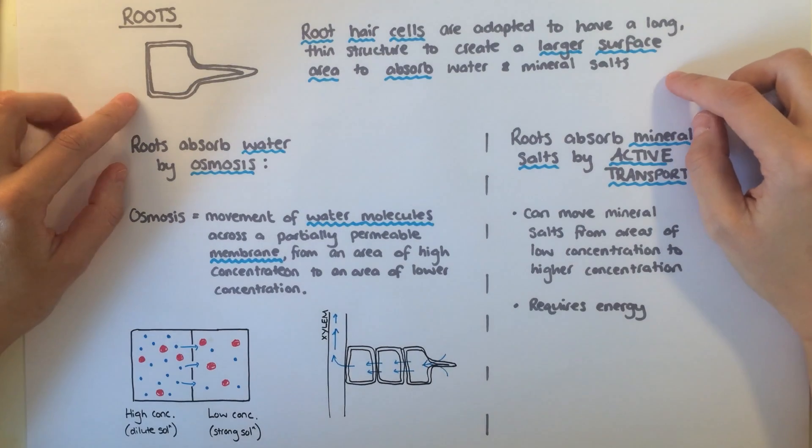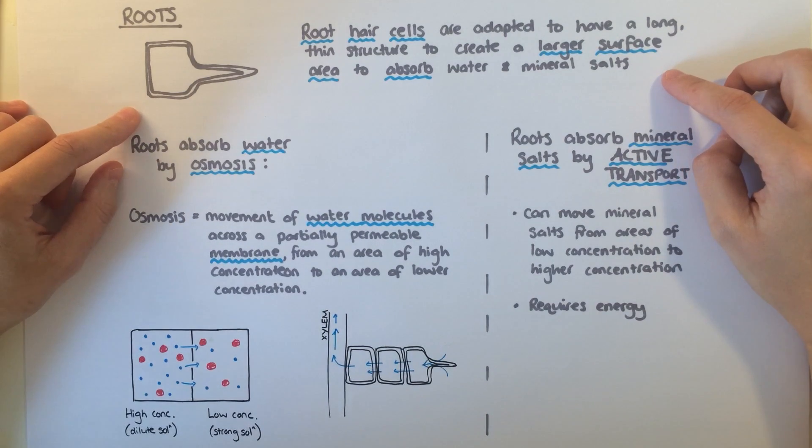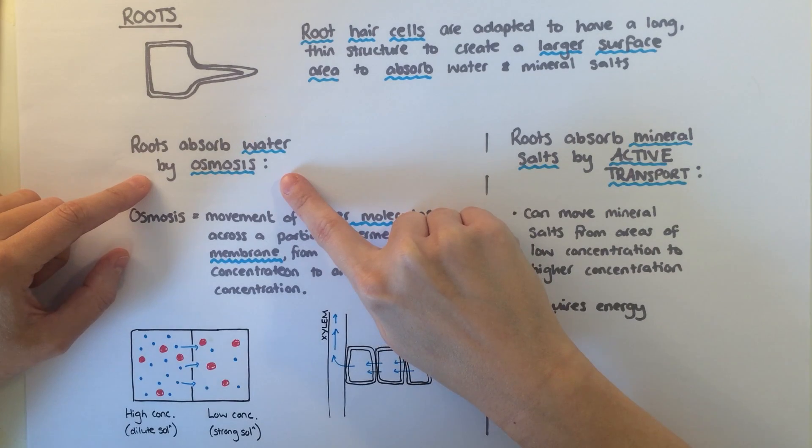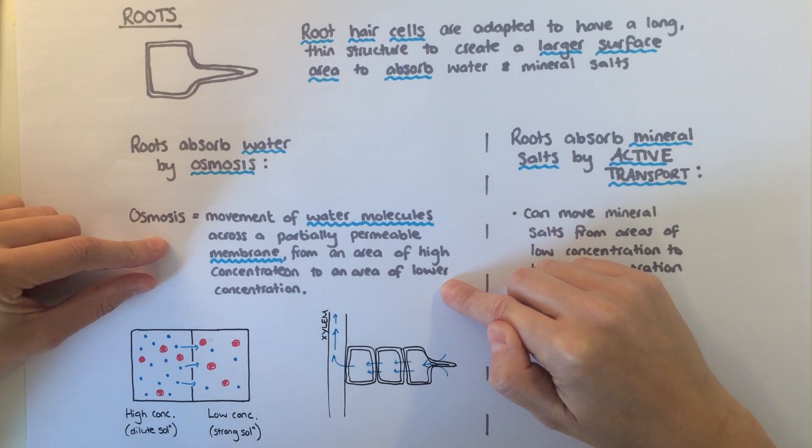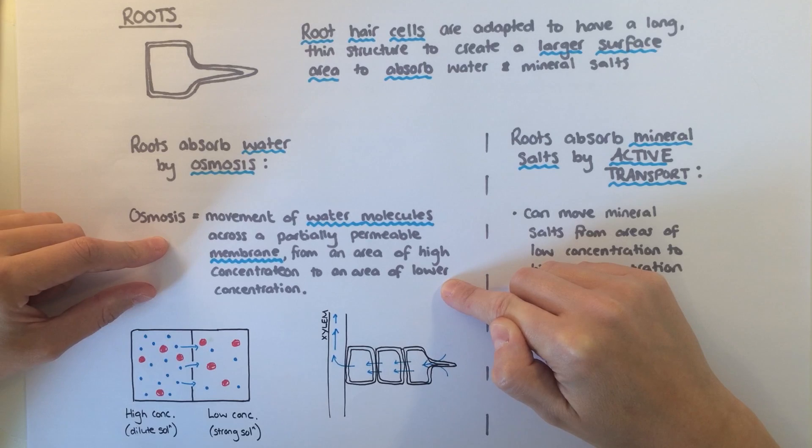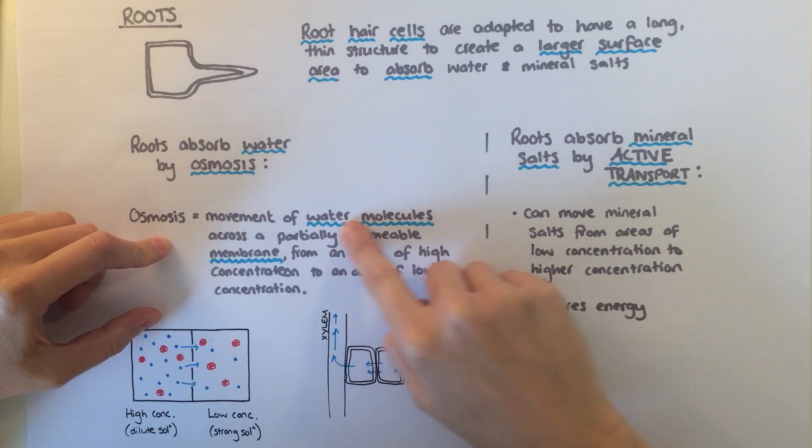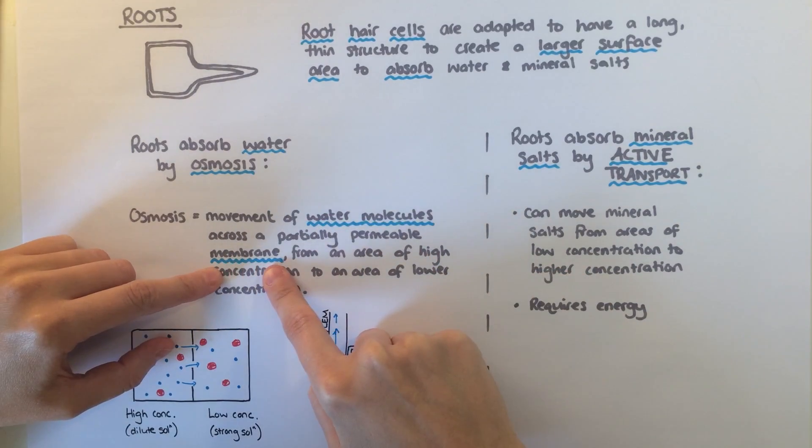On the end of the roots are specially adapted cells called root hair cells. They have a long, thin structure to absorb lots of water and minerals. Water is absorbed by osmosis. This is the movement of water molecules across a partially permeable membrane, like a cell membrane, from an area of high concentration to an area of lower concentration. It's a bit like diffusion, but just for water molecules, and it occurs across a membrane.